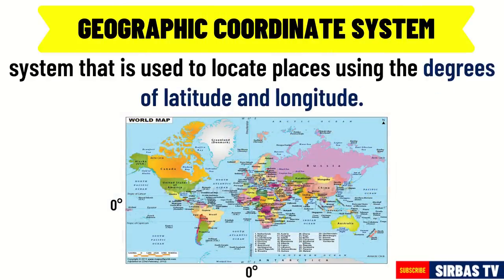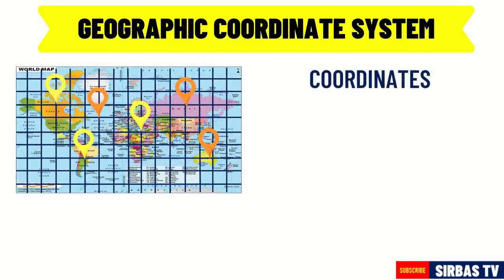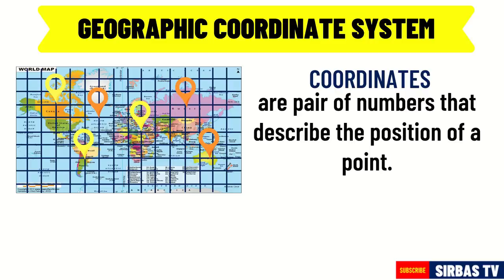It uses the equator as the reference point for latitude and the prime meridian as the reference point for longitude. To locate a place, we need to know the coordinates of the point through which the latitude and longitude intersect. Coordinates are a pair of numbers that describes the position of a point. In this lesson, the coordinates of a place are represented by its degrees of latitude and longitude.